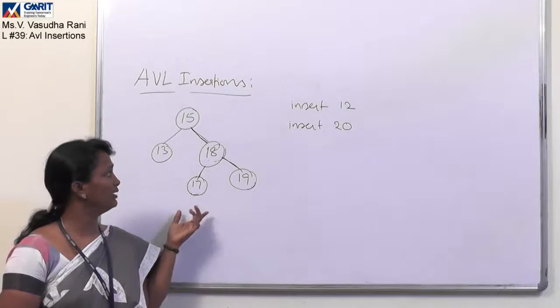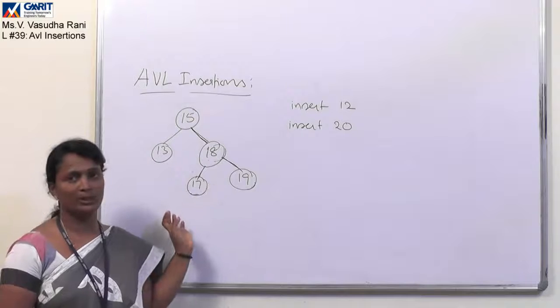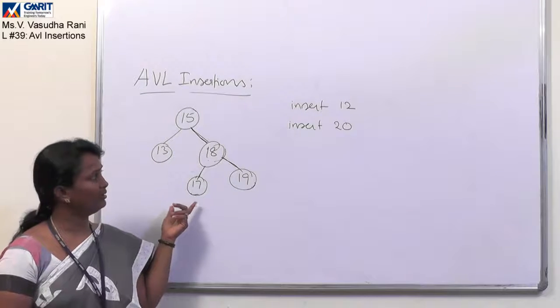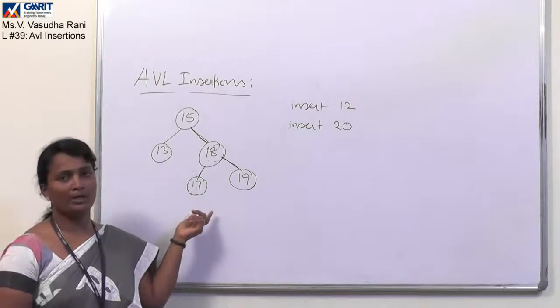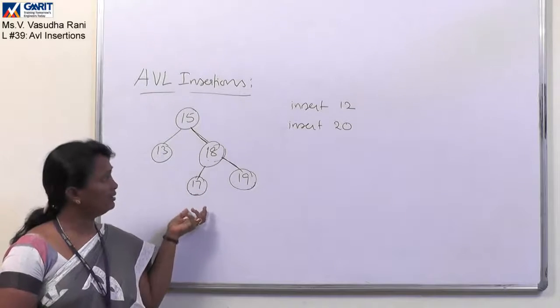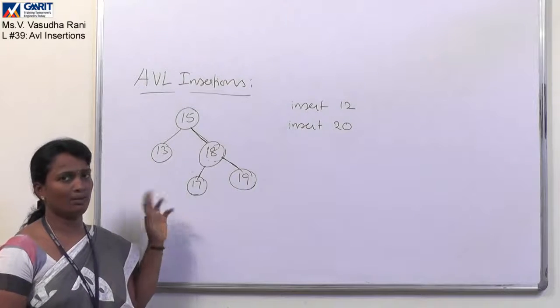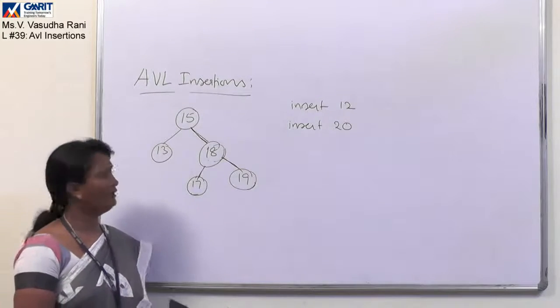For this complex AVL tree, now let us see inserting two different nodes like 12 and 20 and we will see if it is becoming a non-AVL tree using either single rotation or double rotation, how to convert this tree or how to re-adjust this tree into AVL.